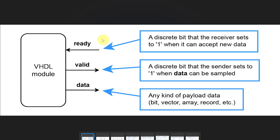As the name implies, the ready-valid handshake uses two control signals named ready and valid. These are both single-bit values — zero or one — in addition to the data being transferred, which can be any kind of VHDL construct as long as it can be stored in a signal: a bit vector, an array, a record, or any VHDL composite type. In this example, this VHDL module is the sender, so we are viewing the signals from the viewpoint of the sender. The ready signal goes into the sender, and this is a discrete bit that the receiver sets to 1 when it can accept new data.